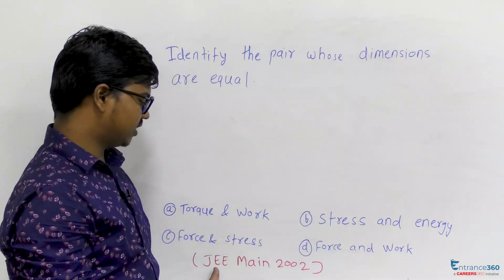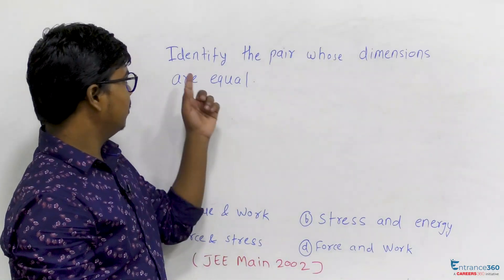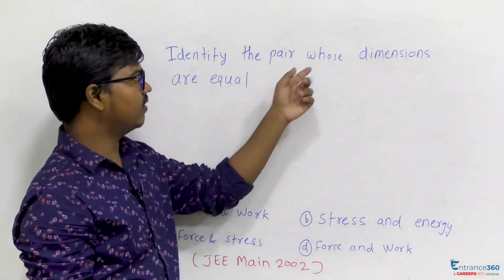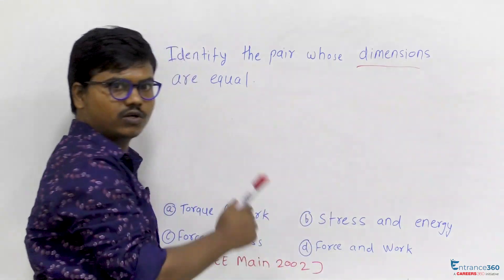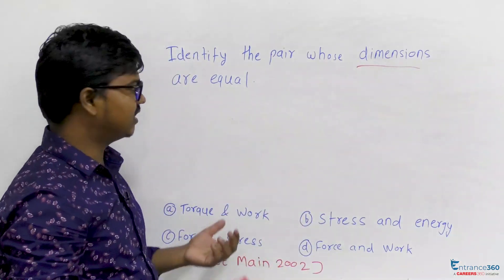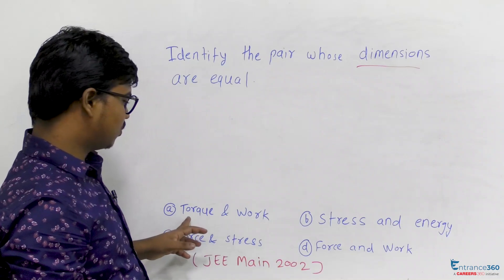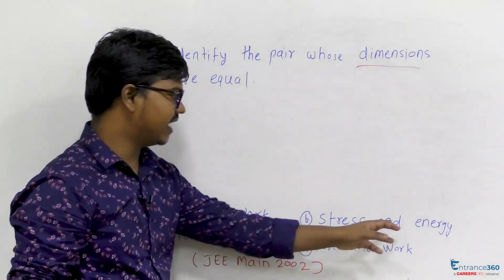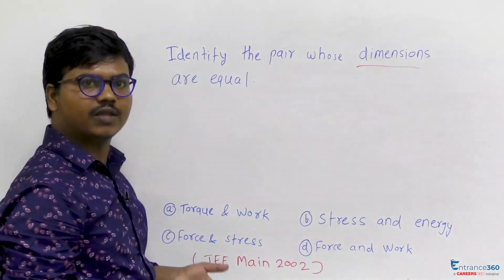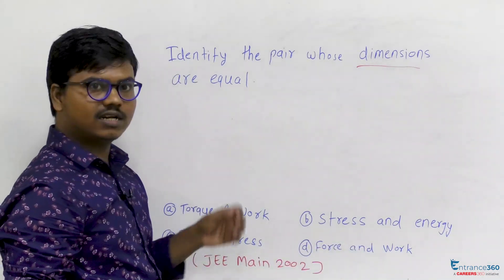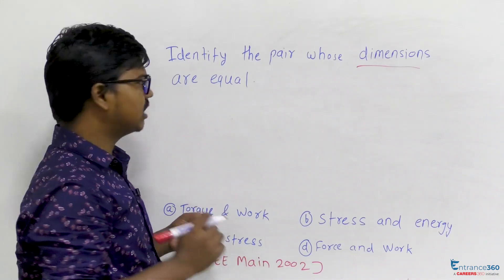Hello students, here is a question asked in JEE 2002 which says: identify the pair whose dimensions are equal. This question is from the chapter Physics and Measurement. We have four options: torque and work, stress and energy, force and stress, and force and work. In dimension concepts, you must know the dimension of force.